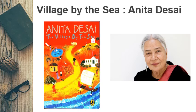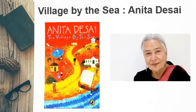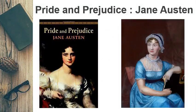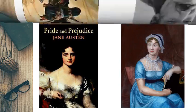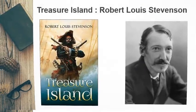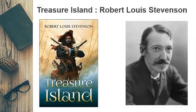It is about two siblings who struggled to maintain their family's bond in difficult times. The second book is Pride and Prejudice, written by Jane Austen. It is a romantic novel of manners.